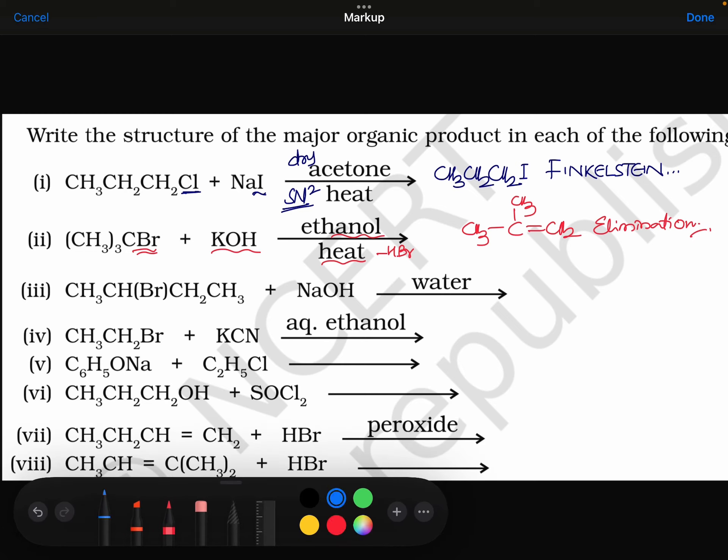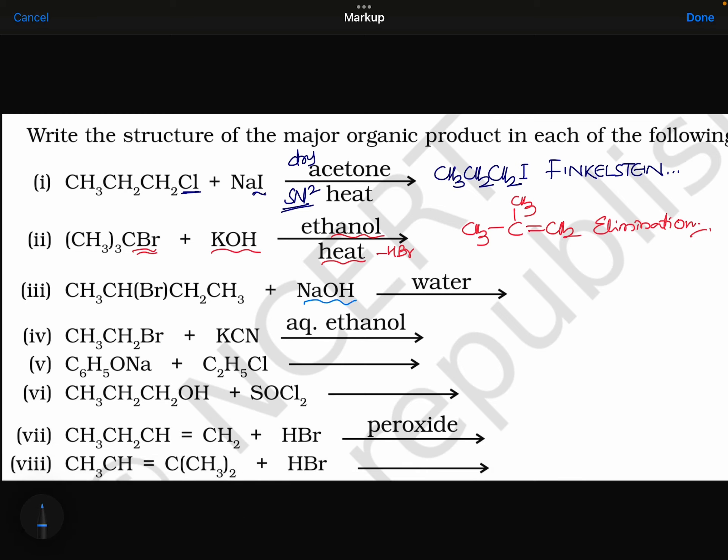Coming to the next one. Here, NaOH water means aqueous sodium hydroxide. Aqueous sodium hydroxide means this bromine should be replaced by OH. There are 4 carbons. 1, 2, 3, 4. Second place, OH. 2-butanol. Very simple nucleophilic substitution reaction.